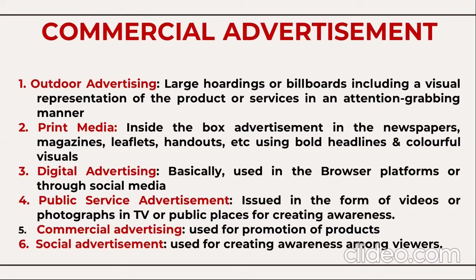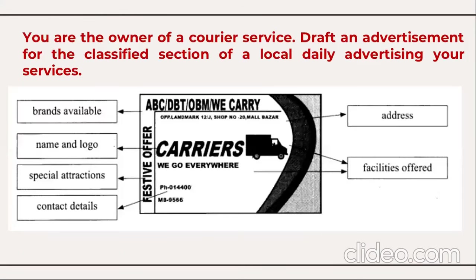Now let's understand commercial advertisements with the help of examples. First question: you are the owner of a courier service — draft an advertisement for the classified section of a local daily. The ad would include the brand name — for example, 'ABC DBT Courier Service' — the logo, address, a special attraction like a festival offer, the facilities offered such as 'we go everywhere,' and the contact details. Such advertisements need good colors and attractive design.